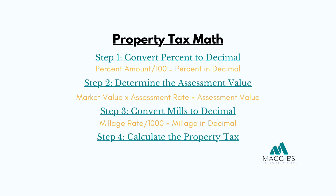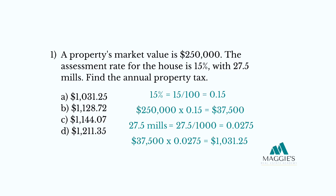Step 4: calculate the property tax. Now that we have the assessment value, we can calculate the annual property tax using the millage rate of 27.5 mills. Assessment value of $37,500 times the millage rate of 27.5 divided by 1,000 equals $1,031.25. The annual property tax for this property is $1,031.25.